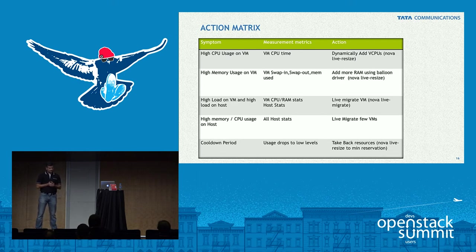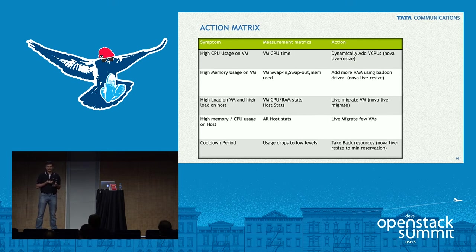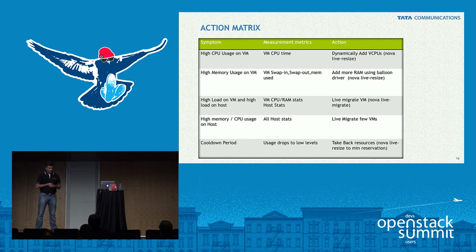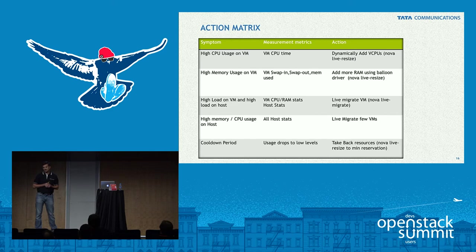You could also see high load on both the VM and the host together. That's when the host is incapable of providing more resources to the VM, so you do a live migration to a host which is underutilized at that time. For high memory and CPU usage on the host, you live migrate a bunch of VMs rather than just a single VM, which will balance out the workloads — also resulting in cost savings in terms of power.